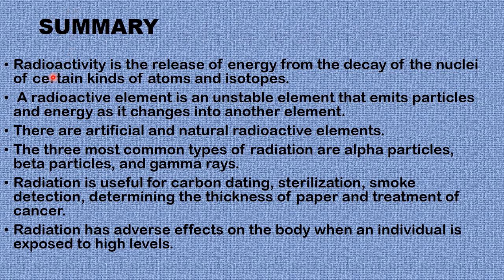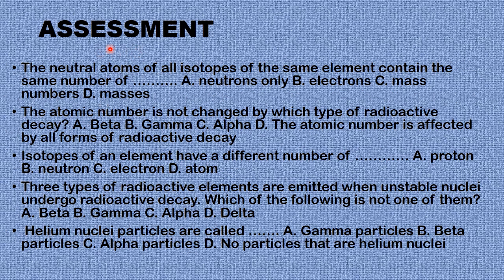In summary: radioactivity is the release of energy from the decay of the nuclei of certain kinds of atoms and isotopes. A radioactive element is an unstable element that emits particles and energy as it changes into another element. The three most common types of nuclear radiation are alpha particles, beta particles, and gamma rays. Radiation is useful for carbon dating, sterilization, smoke detection, determining the thickness of paper, and treatment of cancer, but has adverse effects on the body at high exposure levels.